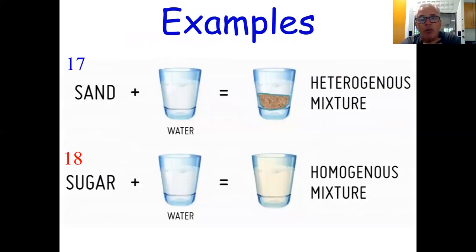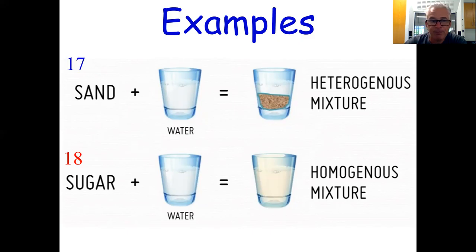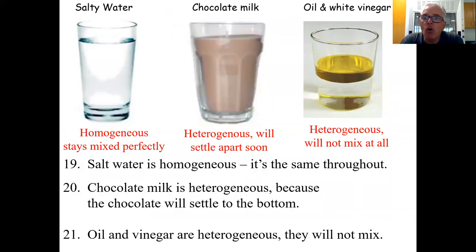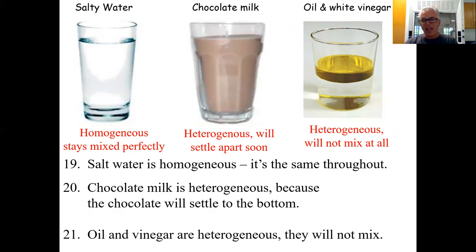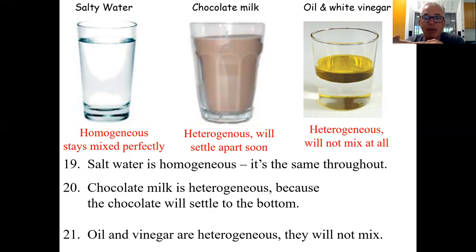For example, sand and water — when you shake them together, the sand falls out quickly and it's wet on top and more solid on the bottom: heterogeneous. Sugar water — shake it up and it's sweet all the way through: homogeneous. Salty water is homogeneous — the same saltiness throughout. Chocolate milk can be heterogeneous because the chocolate settles to the bottom. Oil and vinegar are heterogeneous — they don't mix well; even if you shake them hard they'll come back apart, because their physical properties make them layer rather than truly mix.